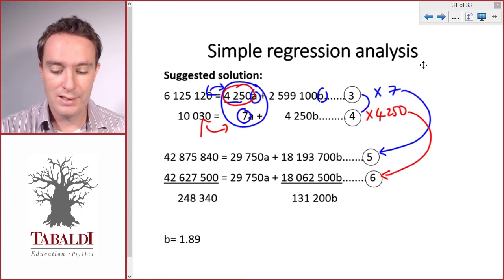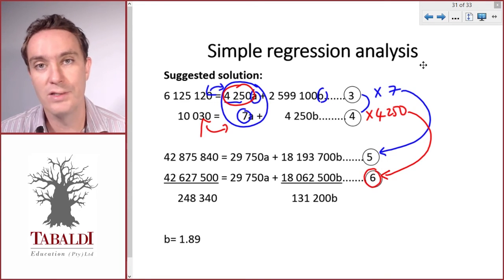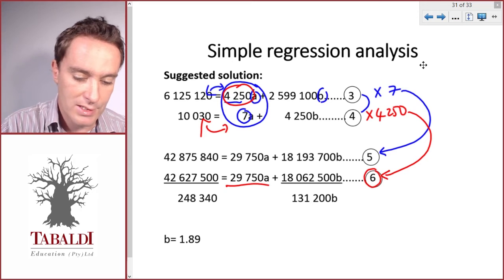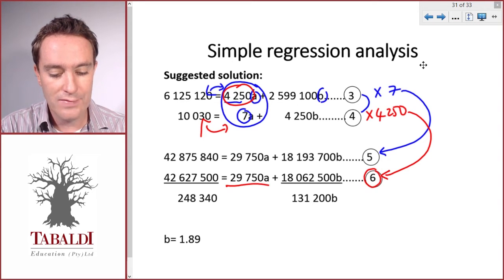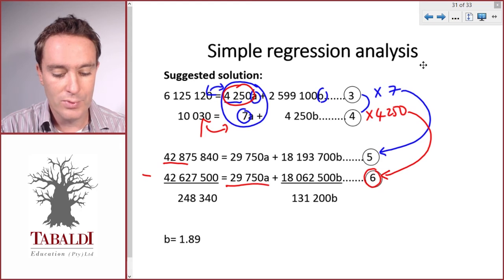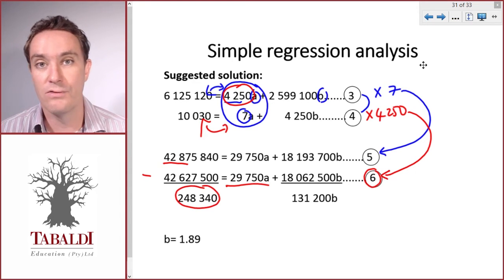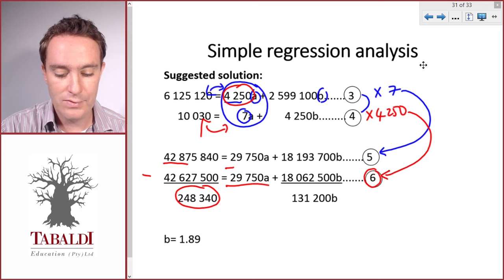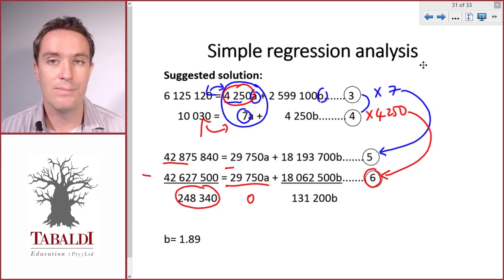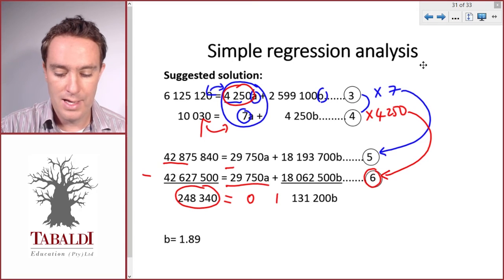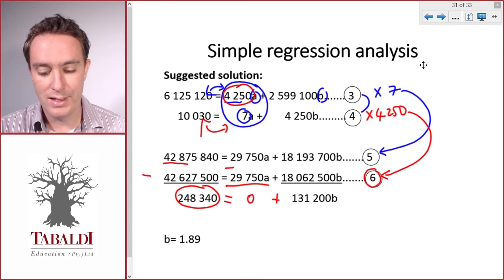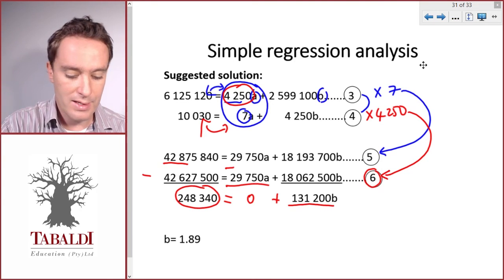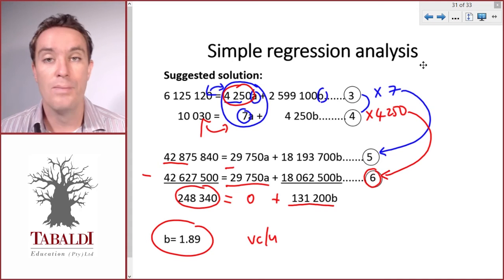Now we can subtract equation six from equation five, and that will effectively eliminate a. Let's start from the beginning. 42.87 million minus 42.6 million will leave 248,340. Then 29750a minus itself will eliminate that value, so a disappears. And then finally, 18.19 million less 18 million gives us 131,200b. Now we can solve b, and that is our variable cost per unit.